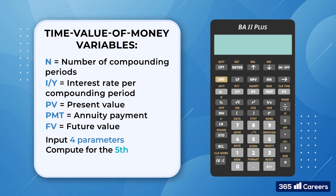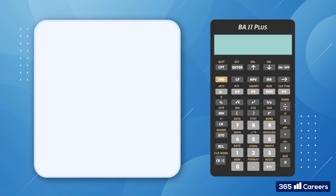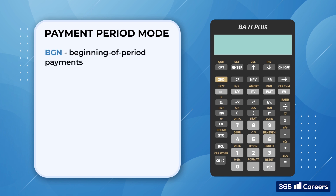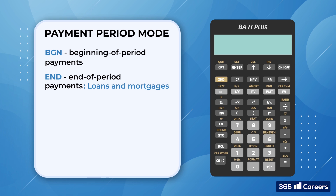Before we can start working on financial problems, we must choose what cash flow mode we'll be using in this lesson. There are two options: BGN, which stands for beginning of period payments, and END mode, in which payments occur at the end of each payment period. This mode is appropriate for ordinary annuities, such as loans and mortgages. By default, the calculator uses the END mode, so we don't have to change it if we are going to examine cash flows which occur at the end of a given period.